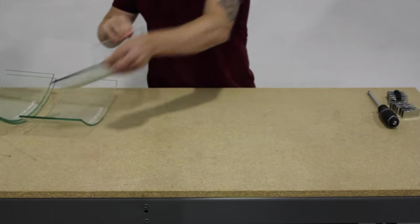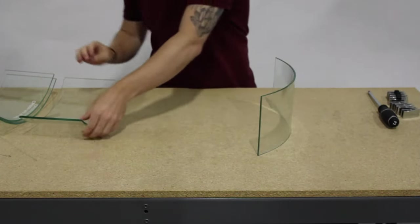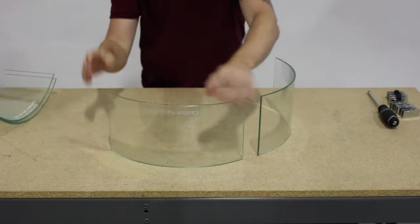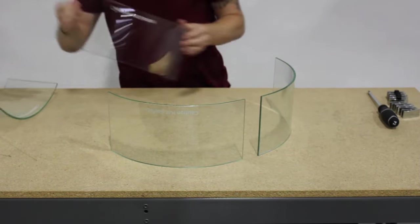To assemble your round flame guard, set each glass panel up with the bottoms facing upwards. Arrange your glass panels into a rough circle shape.